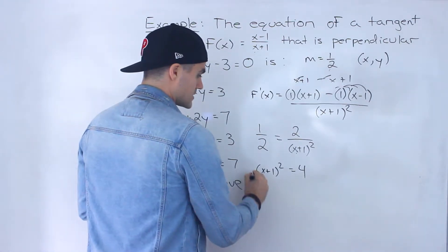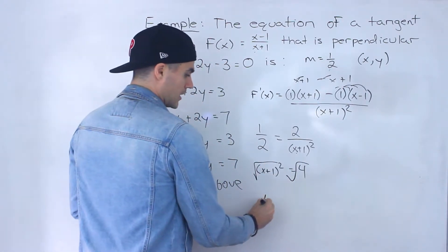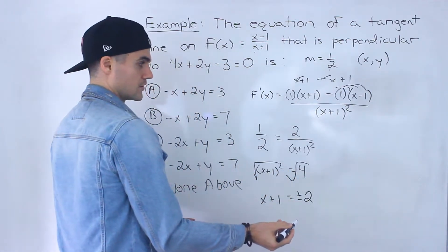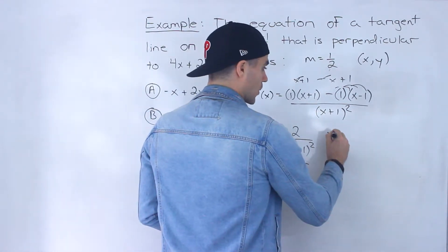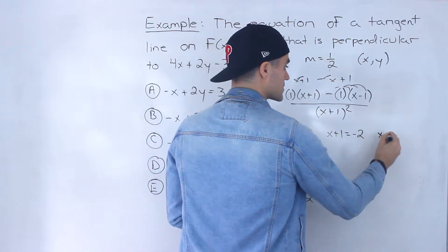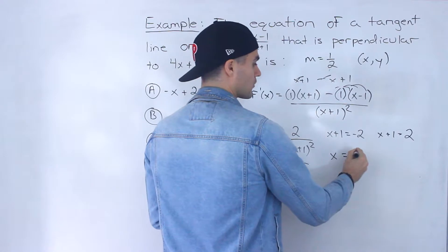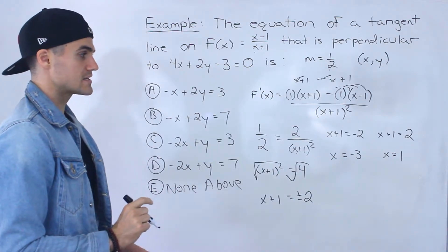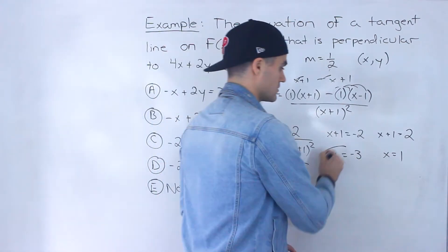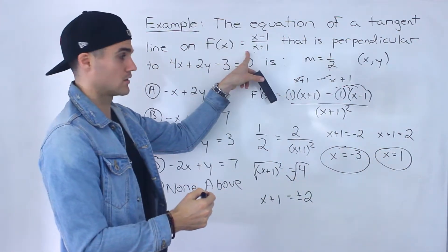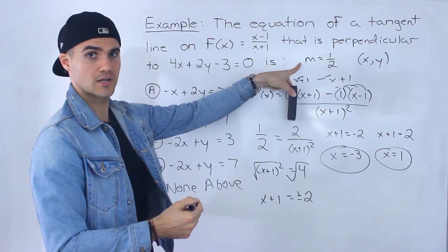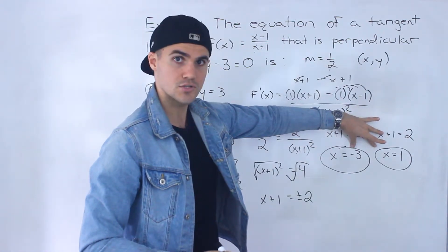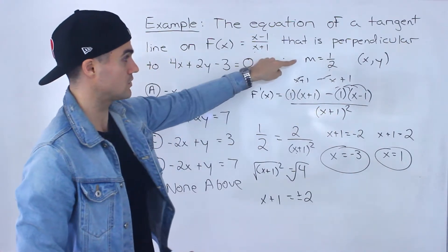Square root both sides to get rid of the exponent. When you square root 4 there are two cases: plus or minus 2. So x plus 1 equals negative 2, giving x equals negative 3, or x plus 1 equals positive 2, giving x equals 1. There are actually two x values on this function where the slope of the tangent is 1 over 2, which makes sense on the graph.